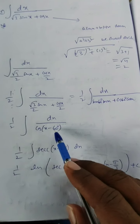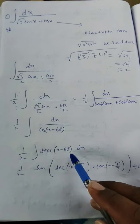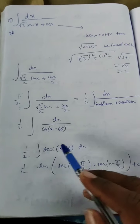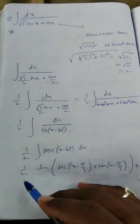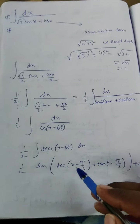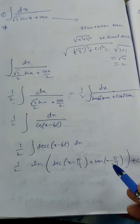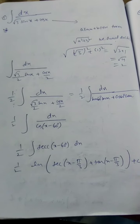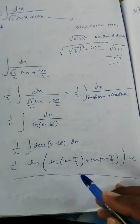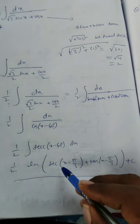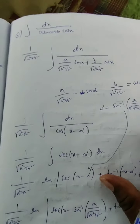Since 1/cos is sec, this becomes (1/2) ∫ sec(x − 60°) dx. The integration of sec x is ln|sec x + tan x|. So the answer is (1/2) · ln|sec(x − π/3) + tan(x − π/3)| + C. We do not divide further because the coefficient of x is 1.